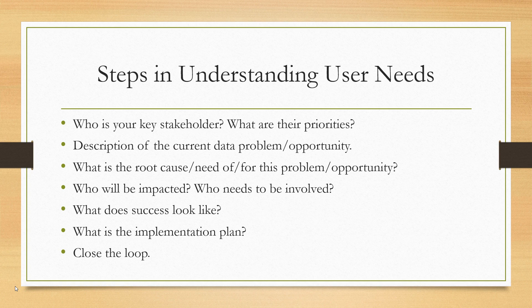Get to the bottom of what's really going on. If they're losing customers, losing sales, or the data shows something wrong with operations, it may just be showing a symptom, so be careful. Find out who is being impacted or will be impacted by your work and who needs to be involved. Importantly, what does success look like? Define the metric that represents a solution to the problem or capitalization on an opportunity. And then close the loop — once you implement something, come back and make sure it actually solved the stakeholder's problem.